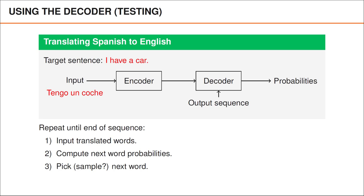In this case, the sentence 'I have a car' would be an excellent translation, and I will refer to this as the target sentence. Of course, the network would not have access to the target sentence, and to produce a translation using the network, we would instead repeat the following steps. First, apart from feeding the Spanish input sentence into the encoder, we also feed the part of the English sentence that we have already translated into the decoder, here denoted as output sequence. Second, we compute probabilities of the next word. And third, we use these probabilities to select the next word in our translation, either by sampling a word or by picking the word with the highest probability. Note that the third step is not performed by the network.